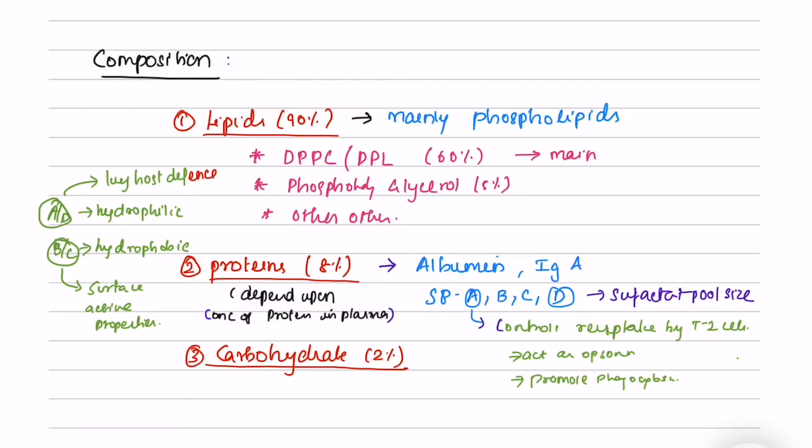Composition of surfactant: It is made up of 90% lipids, mainly phospholipids, 8% proteins, and 2% carbohydrates. The lipid includes dipalmitoyl phosphatidylcholine, or DPPC, at 60%, phosphatidylglycerol at 5%, and other lipids.